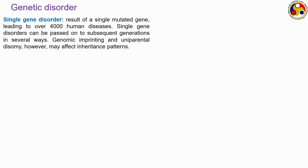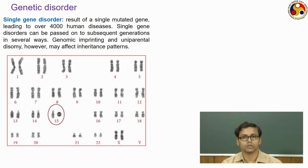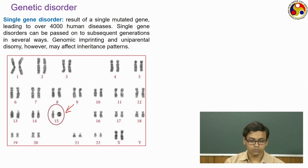Genetic disorders from radiation are commonly of two types. The single genetic disorder involves only a single gene that gets mutated, which can lead to more than 4,000 diseases per present-day knowledge. This can be passed on to subsequent generations in several ways depending on the inheritance pattern. As we can see from this figure, a common human being has 23 chromosomes — 22 autosomes and 2 sex chromosomes. Here only chromosome number 15 is showing some abnormality, which is what we refer to as single genetic disorder.